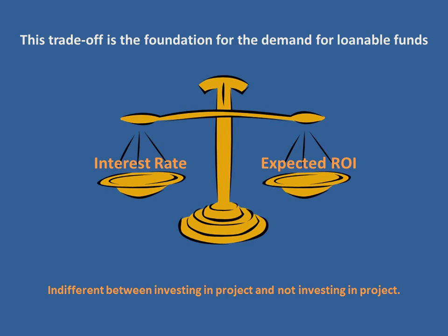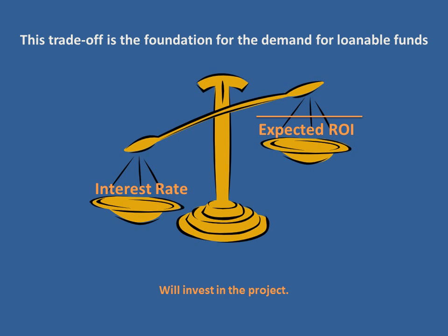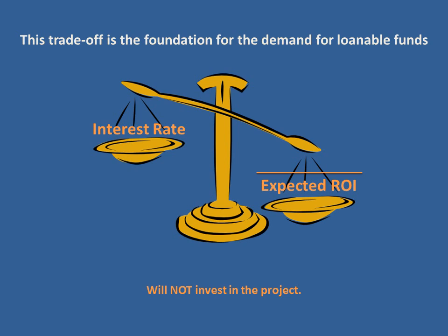As you can see, we looked at the balance between the interest rate and the expected return on investment, just as we did in the first video. Both of these things are changing at all times, so it's hard to analyze unless we hold something constant. In this example we held the expected return on investment for each firm constant and changed the interest rate. When we lowered the interest rate, we saw more firms investing; if we raised it, fewer firms would take on the project.